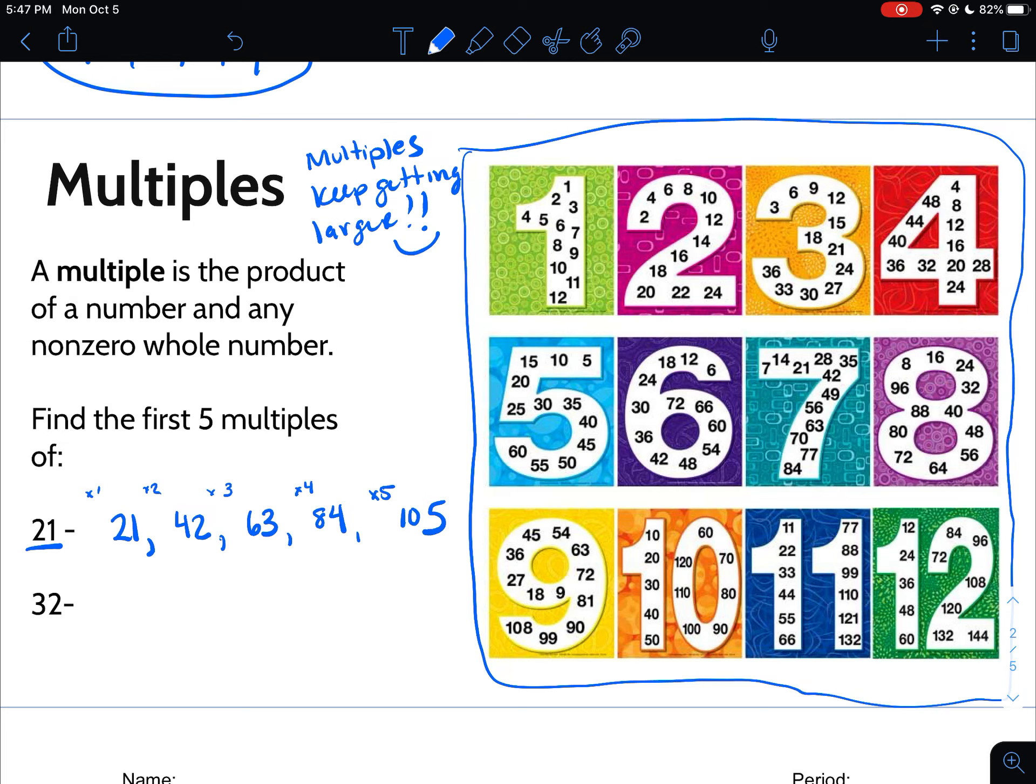The first five multiples of 21 are 21, 42, 63, 84, and 105. Notice you're just skip counting. Always start with the given number. That's going to be your first multiple. Always start with the given number.